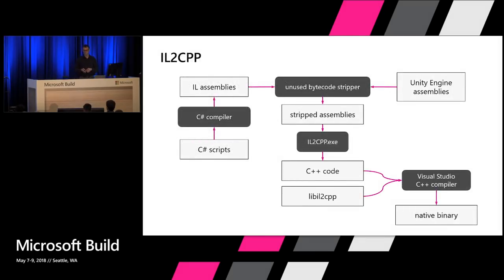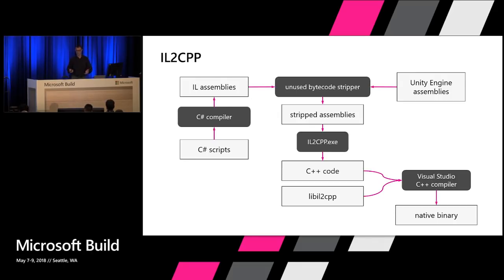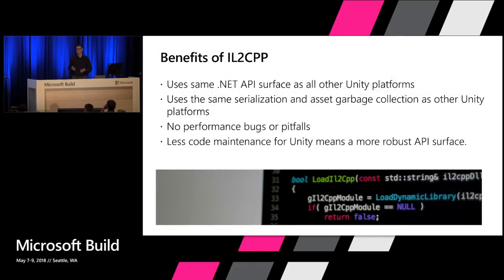Two years ago we introduced something called IL2CPP — a Unity-developed .NET runtime. We compile the C# code using Mono or another C# compiler, then IL2CPP converts the IL code into C++ code, and we compile that into whatever native binary files — whether it's an EXE, APK, or XAP — for the specific platform. The biggest advantage of IL2CPP is that you can create scripts which compile across all platforms without any modification — it's the same .NET back end, giving us a robust, performant, and consistent API surface across platforms.